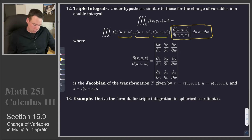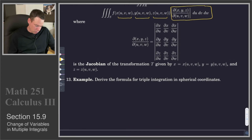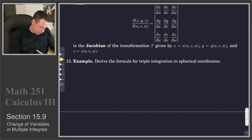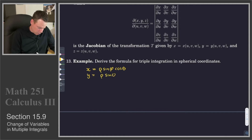The absolute value is what gets used in the expression in the integral. So let's use this to derive the formula for triple integration in spherical coordinates. The change of coordinates for spherical coordinates is: x is rho sine phi cos theta, y is rho sine phi sine theta, and z is rho cos phi.